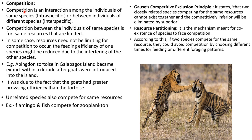Competition is an interaction among individuals of the same species (intraspecific) or between individuals of different species (interspecific), competing for the same limited resources. For example, two tigers fighting for the same food. In some cases resources need not be limited for competition to occur — the feeding efficiency of one may decrease due to interference by the other. For example, tortoises on an island became extinct within a decade after goats were introduced, because goats had greater browsing efficiency. Unrelated species such as flamingos and fish also compete for the same resource — zooplankton.